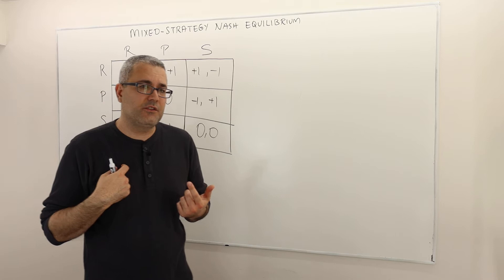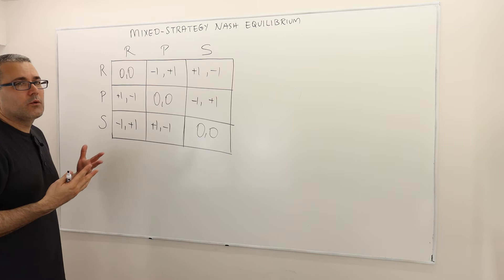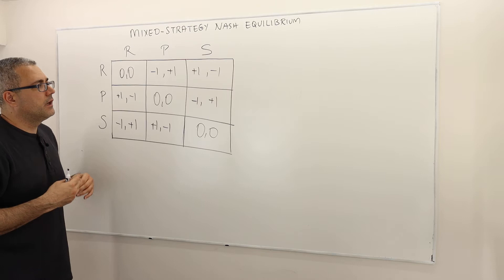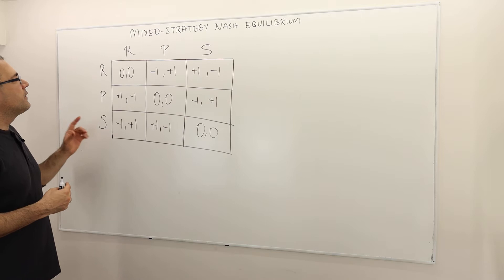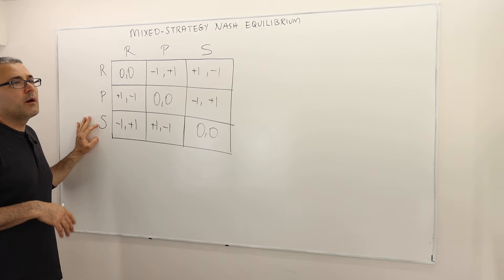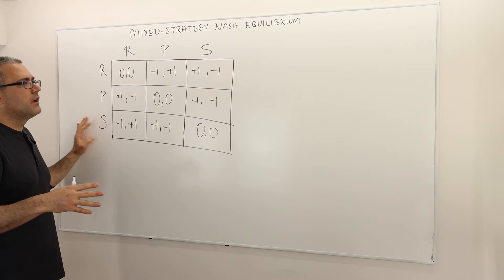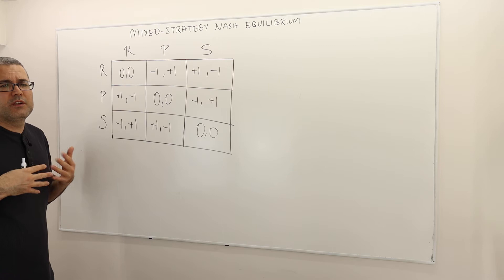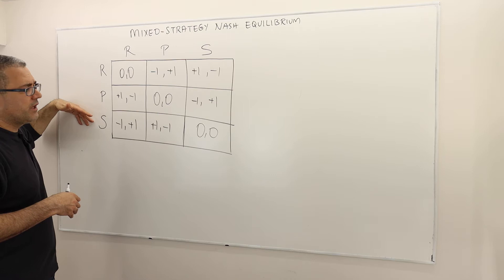Hi guys, this is another example to talk about mixed strategy Nash equilibrium. The question is: what are the Nash equilibria of this game? I'm not going to fully solve it — I'll just make some argumentation about important points. First, always try to figure out the dominated strategies, meaning find the rationalizable strategies, because the game may consist of a smaller set of rationalizable strategies, which is easier to work with.